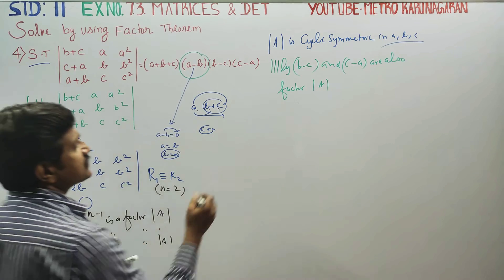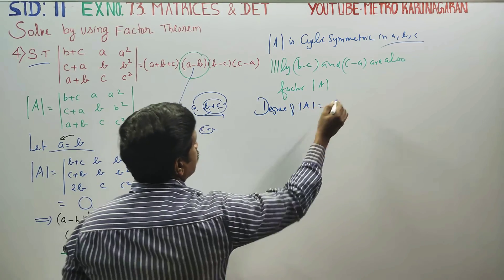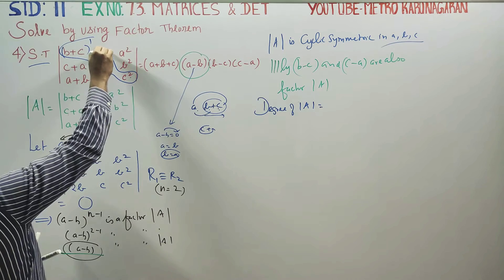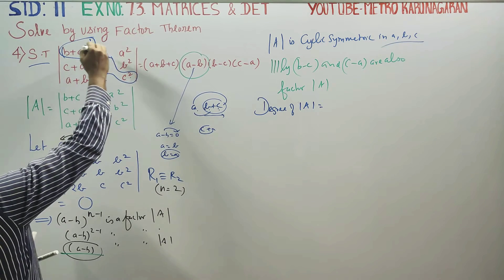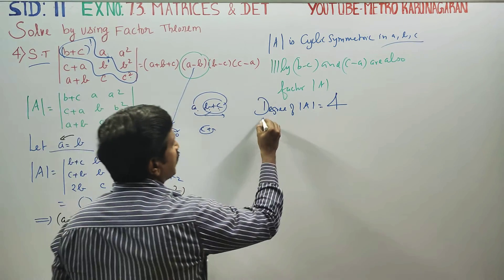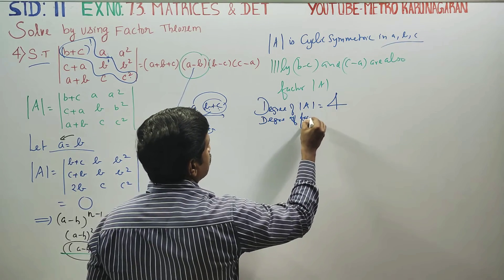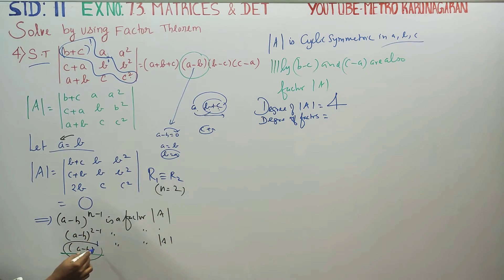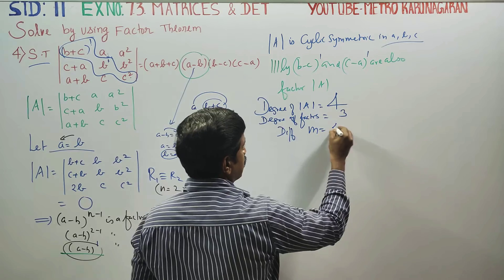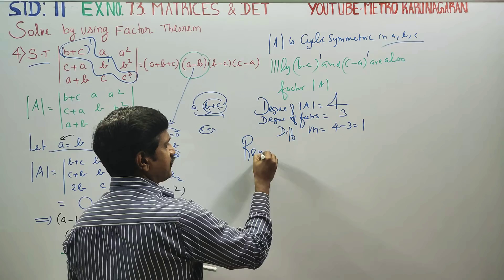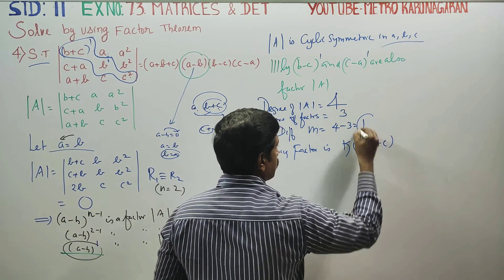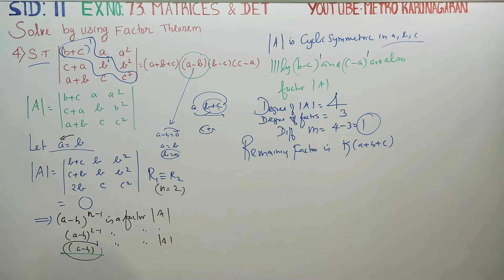Now consider the degrees. Each element in the determinant has degree corresponding to its column — degree 1 and degree 2 terms — giving an overall degree of 3 for the determinant. The three known factors (a−b), (b−c), (c−a) are degree 1 each, totaling degree 3. The difference is 4−3 equals 1, so the remaining factor is k times (a+b+c).